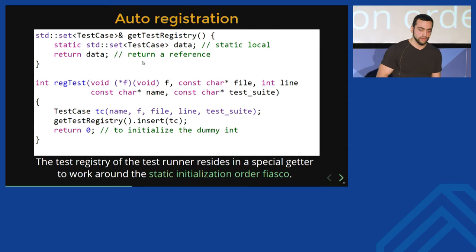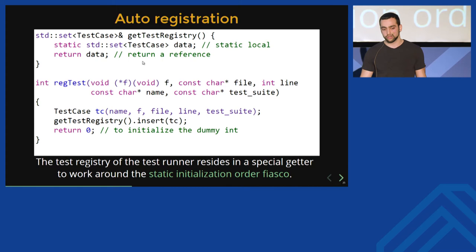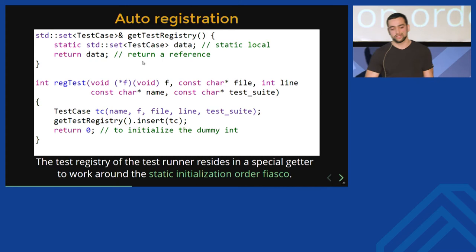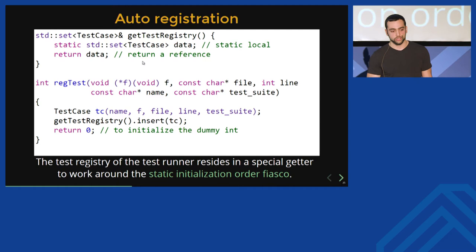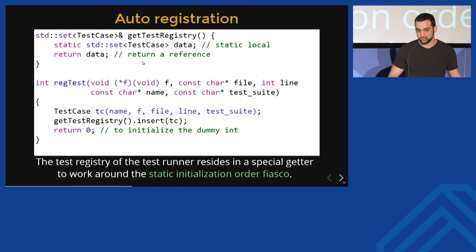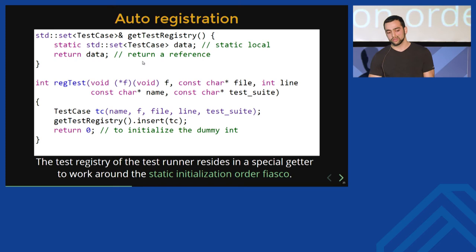When we call `reg_test` before entering main — while globals are initialized — we need to put that test case into some registry. But we can't simply make the registry a global variable inside the test runner because we have no guarantees it will be initialized. This is called the static initialization order fiasco in C++. C++ guarantees the order of initialization of globals within a single translation unit is top to bottom, but between different translation units there are no guarantees. So I've made a getter function with a local static variable which is returned by reference — the first time it's called, the registry is constructed and then returned by reference. We insert the test case and return zero to initialize the dummy integer.